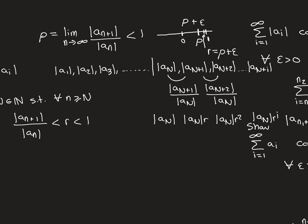We can now compare the terms of the series to terms of a geometric series with ratio R less than 1. The term |a_{N+1}| is compared to |a_N|·R, |a_{N+2}| to |a_N|·R², and the general term |a_{N+i}| to |a_N|·R^i. This time, since all ratios are less than R and R is less than 1, all the actual terms are going to be smaller than the corresponding geometric terms. The inequality goes the other way compared to the divergence case.